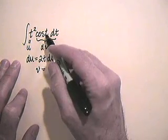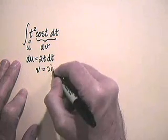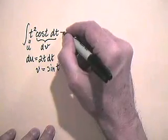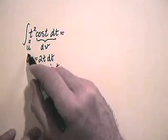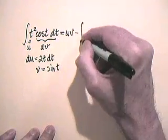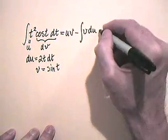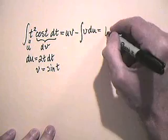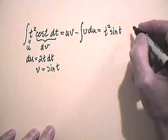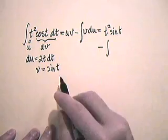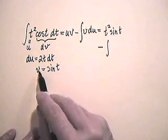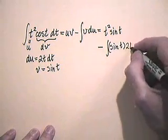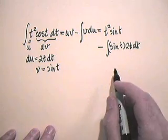Differentiating t² lowers the power, while anti-differentiating would raise it. So let's use t² as u, and cos(t) dt as our dv. Then du is 2t dt, and v — the anti-derivative of cos(t) — is sin(t), since the derivative of sine is cosine. Our integration by parts formula gives: t² sin(t) minus the integral of sin(t) times 2t dt.